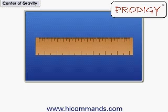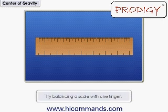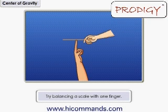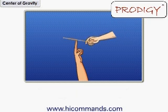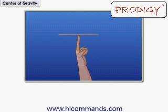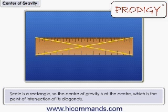Suppose you want to find the center of gravity of a scale. Try balancing the scale with one finger. You will find that you are able to balance when you hold it exactly at the center of the scale. A scale is a rectangle, so the center of gravity is at the center, which is the point of intersection of its diagonals.